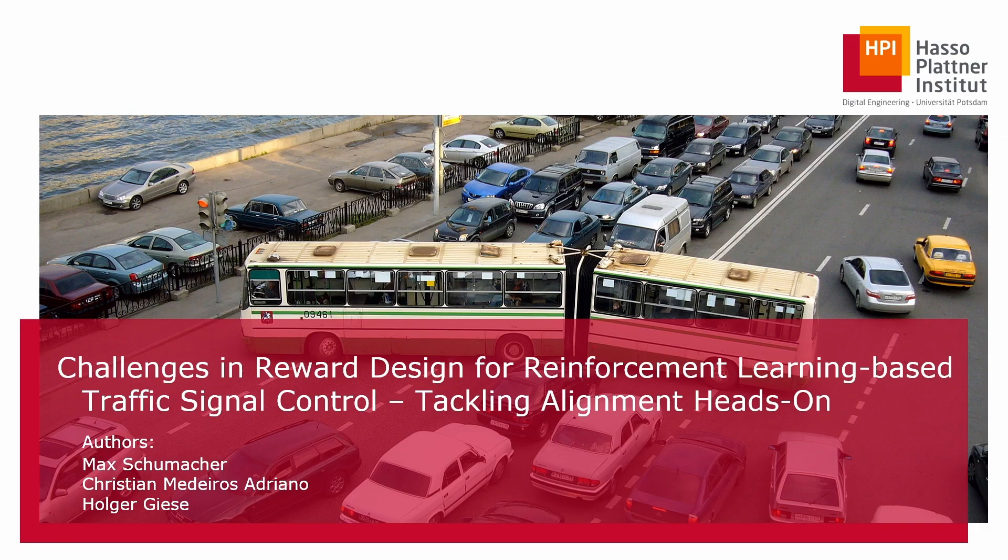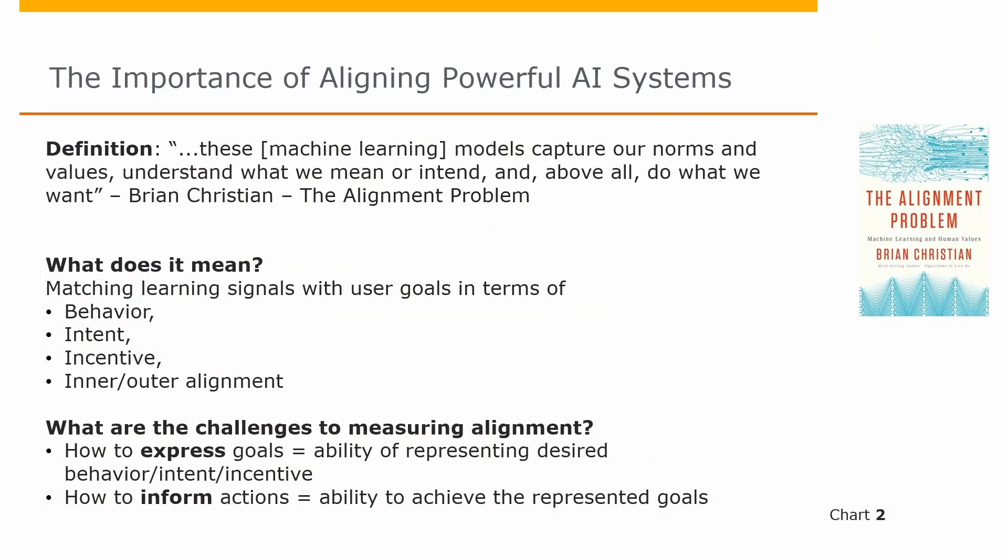So what is alignment? If we get a definition from Brian Christian, alignment is that when the models capture our norms, our values, understand what we mean or intend, and above all, do what we want. So if a machine model is not aligned with our goals — human goals — then we call it misaligned. And misalignment means when the behaviors, intent, incentives, or inner or outer alignment are off. We have something that is a proxy of your goal, which is the inner alignment, and it's misaligned.